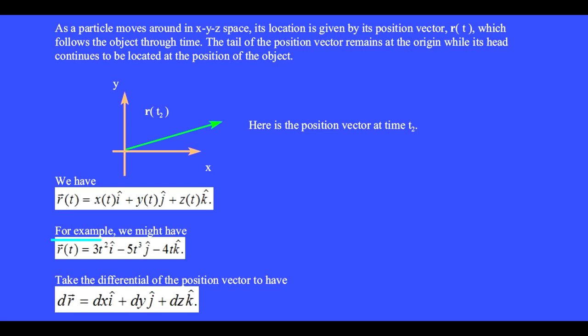For example, we might have position vector R equals 3t squared minus 5t cubed minus 4t. Taking the differential of the position vector gives dr equals dx i-hat plus dy j-hat plus dz k-hat.